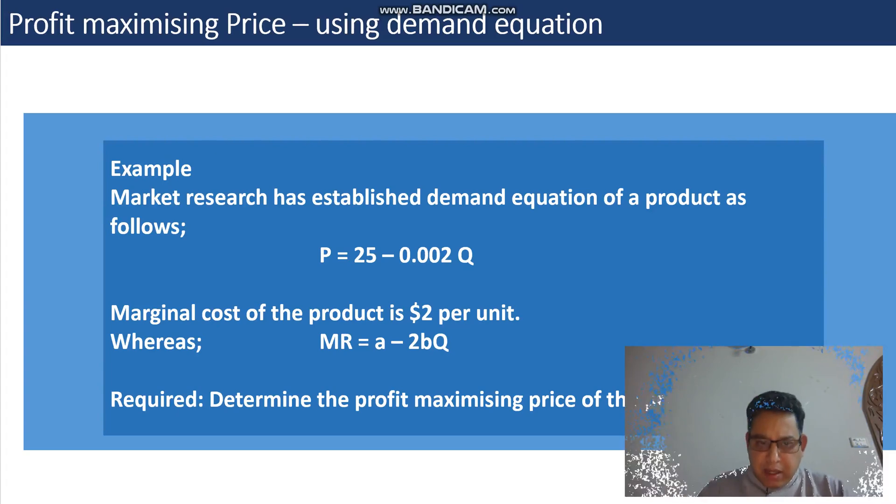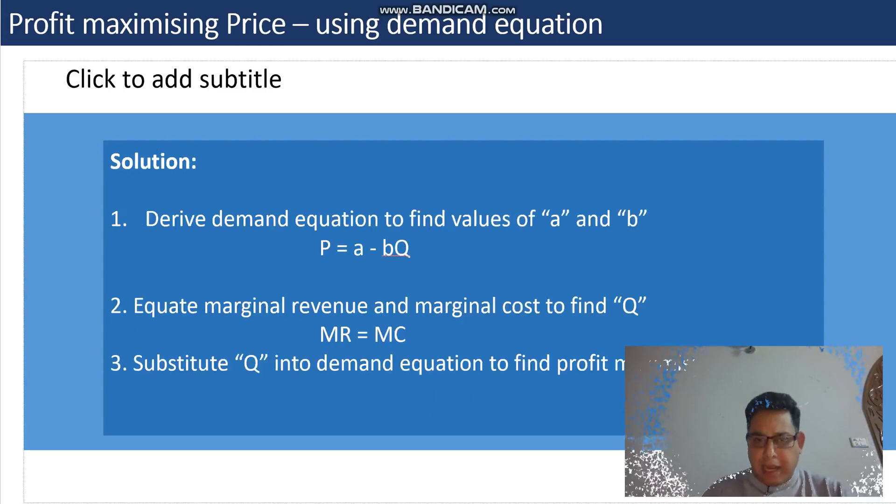When this information is given, we are required to determine the profit maximizing price of the product. Just to remind you of the steps: we always derive the demand equation if we don't have it already, then we calculate the b value first, then the b value is substituted into the demand equation to get the value of a.